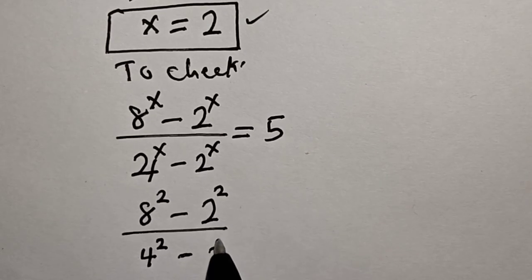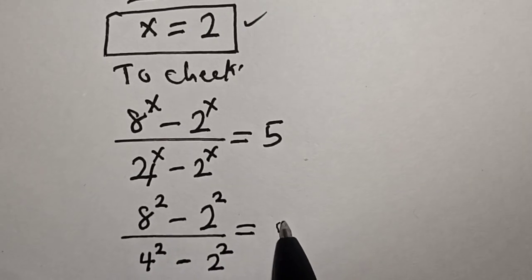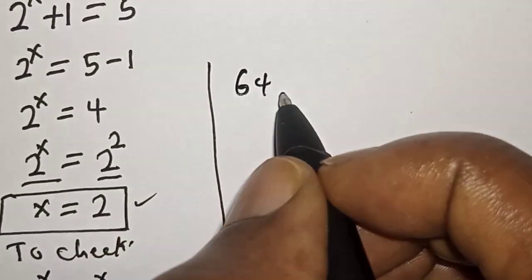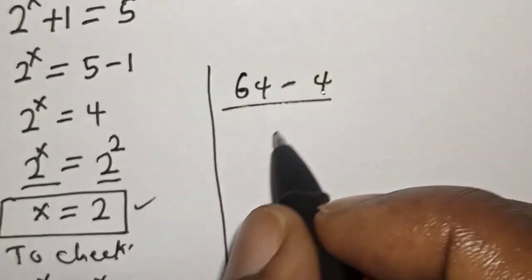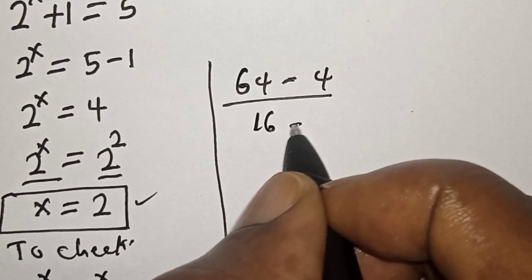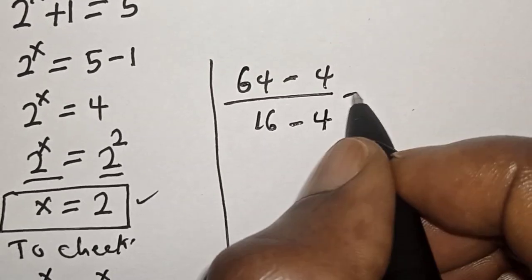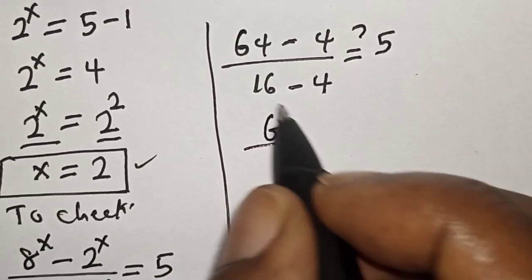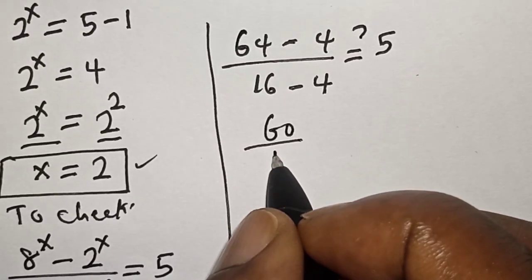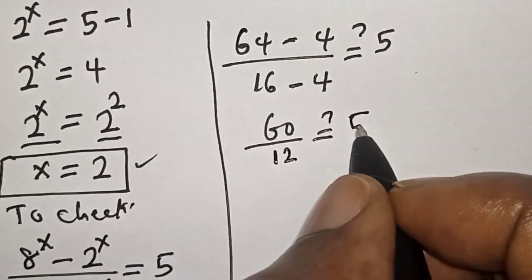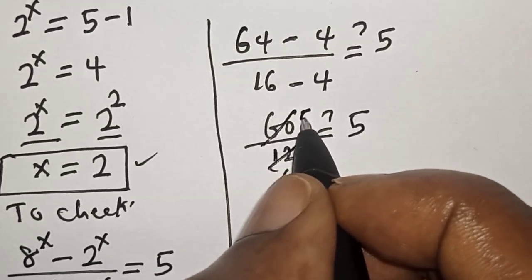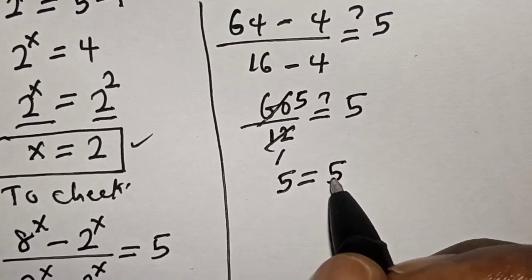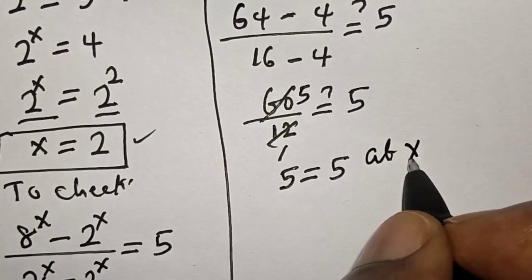8 raised to power 2 is 64, minus 2 raised to power 2 which is 4, divided by 4 raised to power 2 which is 16, minus 2 raised to power 2 which is 4. That gives us 60 divided by 12, which equals 5. Therefore 5 equals 5 — the left hand side equals the right hand side at x equals 2.